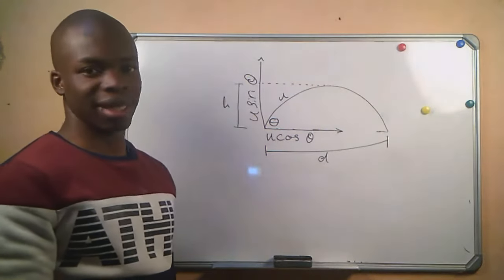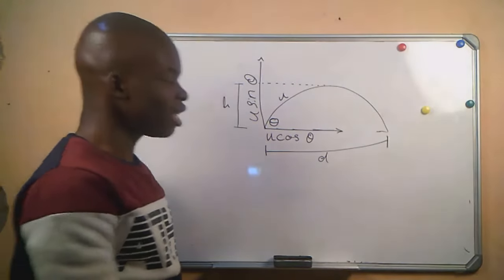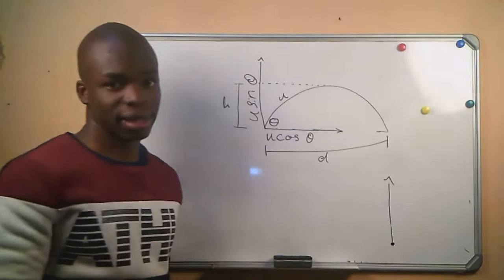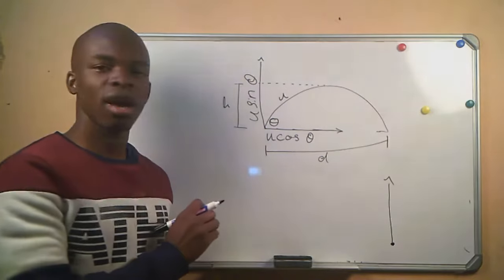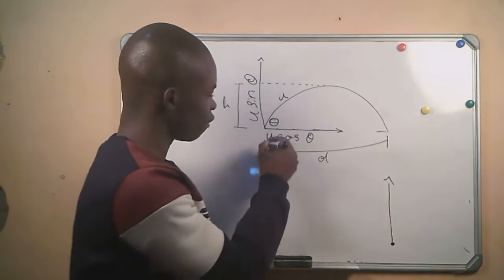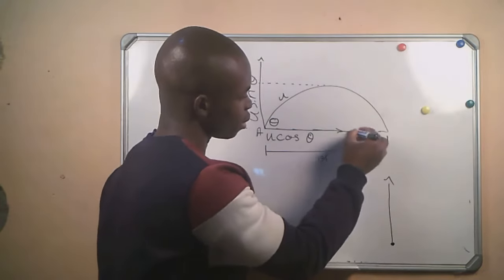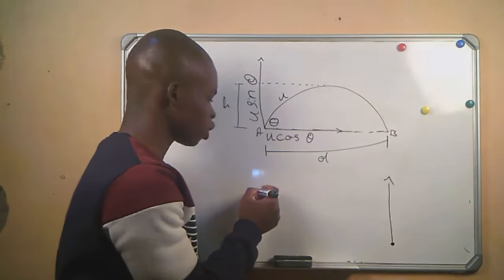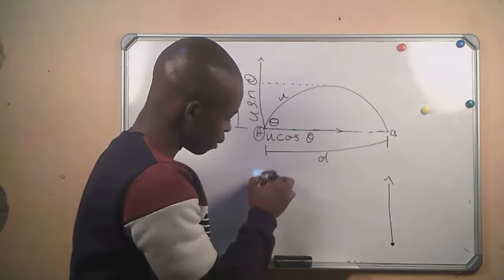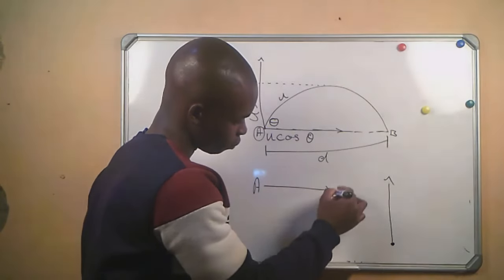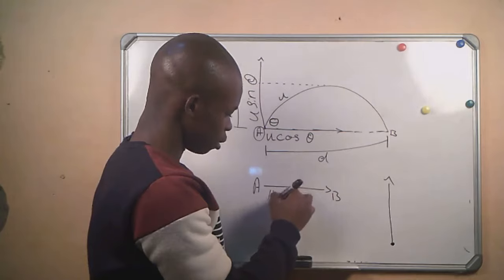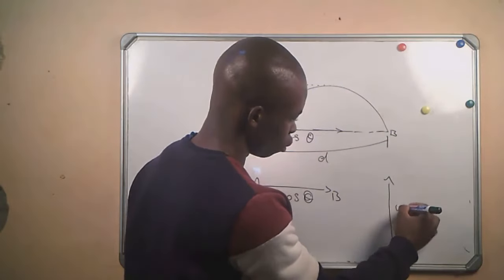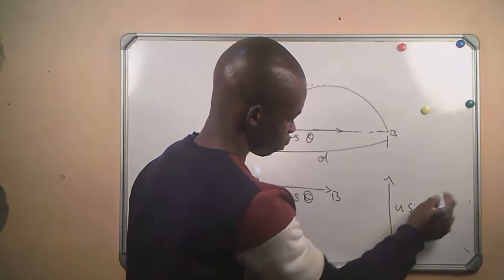Whenever we deal with the vertical component, we take it as if the object was projected vertically upward. Whenever we deal with the horizontal component — let's say this is point A and this is point B — we take it as if the object was projected straight from A to B at velocity u cos θ, and the vertical is u sin θ.